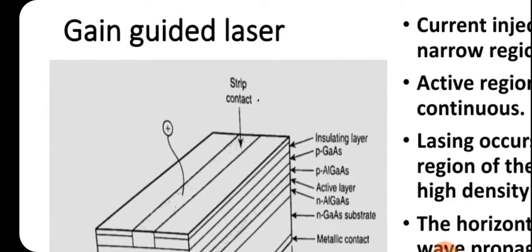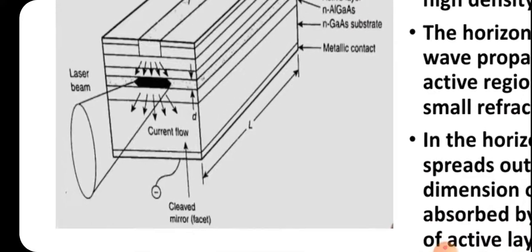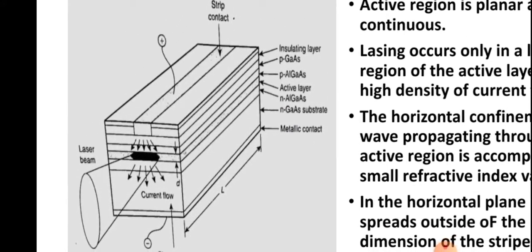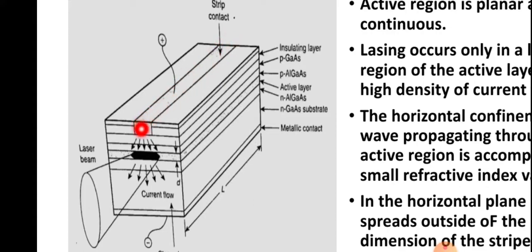This is the figure of the gain guided laser. The positive contact is taken here and there is a negative contact. Various layers of P and N materials are there, and this region shows the active region. The laser beam is emitted from here, shown like a cone, and D shows the width of the active region. A stripe contact is taken here — this is a stripe contact — and there is an insulating layer of insulating material. There is a P gallium arsenide layer, a P aluminum gallium arsenide layer, an active layer, an N aluminum gallium arsenide layer, and an N gallium arsenide substrate, as well as a metallic contact. A PN junction is formed here and light will be emitted through this active region.